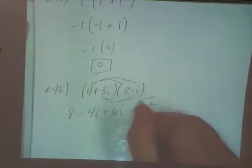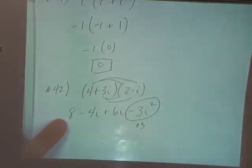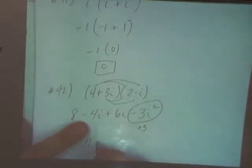I squared is negative one, right? So this is going to become what? Positive three. Plus three. I'm going to combine a plus three and an eight. It gives me 11. And then plus two I.